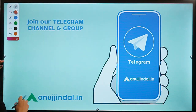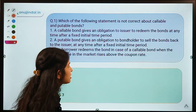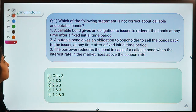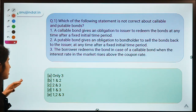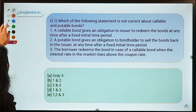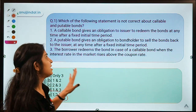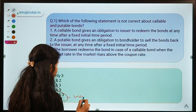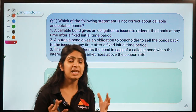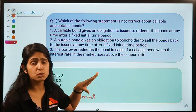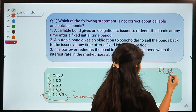Moving straight to question number one: which of the following statements are not correct about callable and putable bonds? You have to select the correct statements. The correct option is option E, meaning all three statements — one, two, and three — are incorrect and need correction. Let us first understand the meaning of callable and putable bonds.